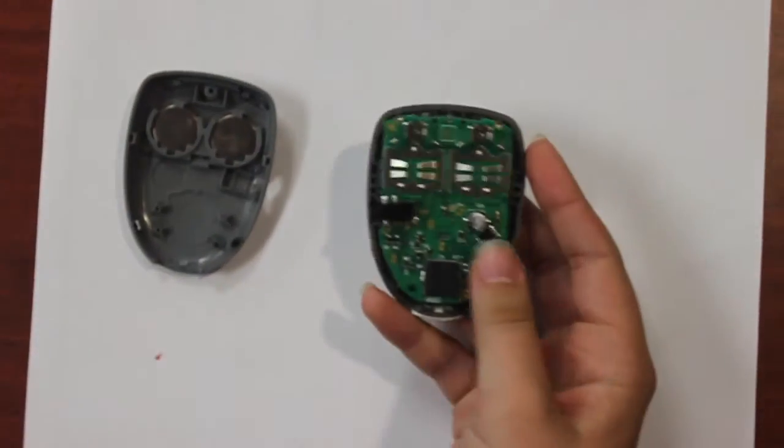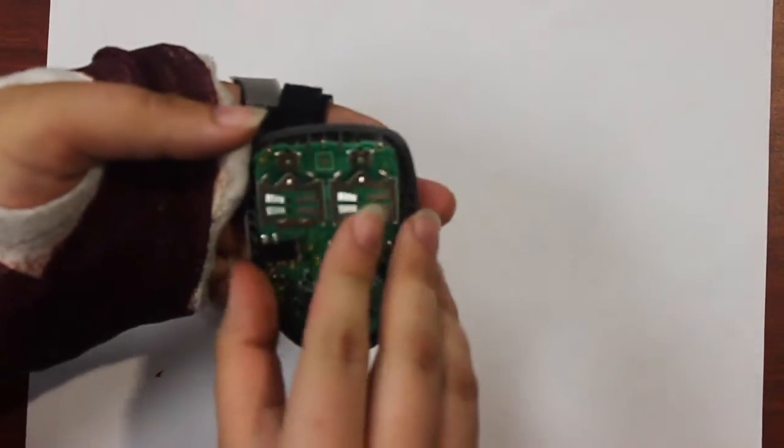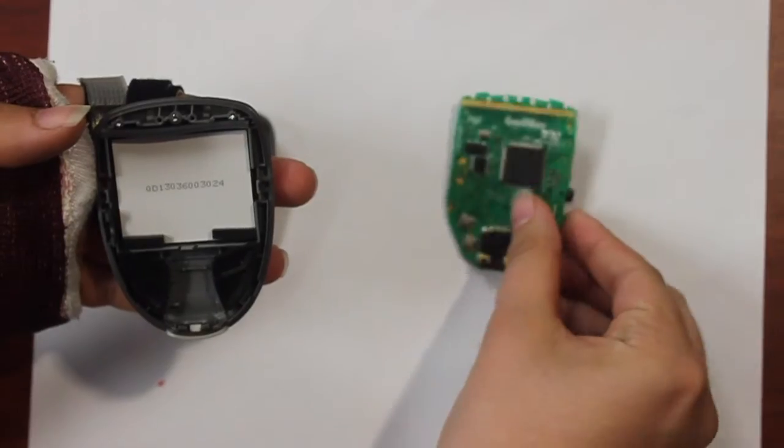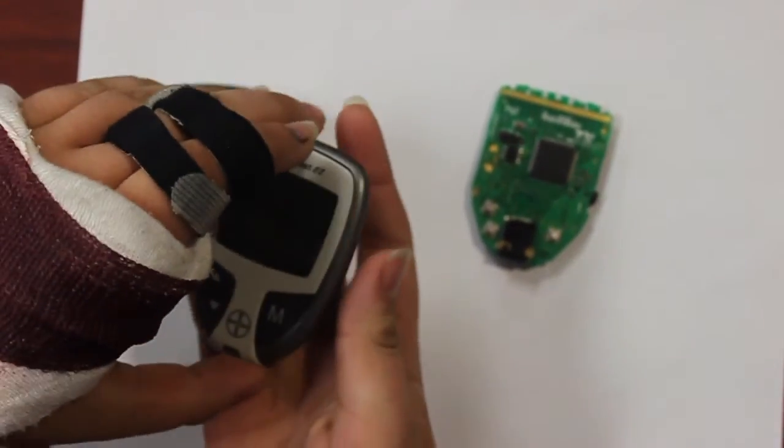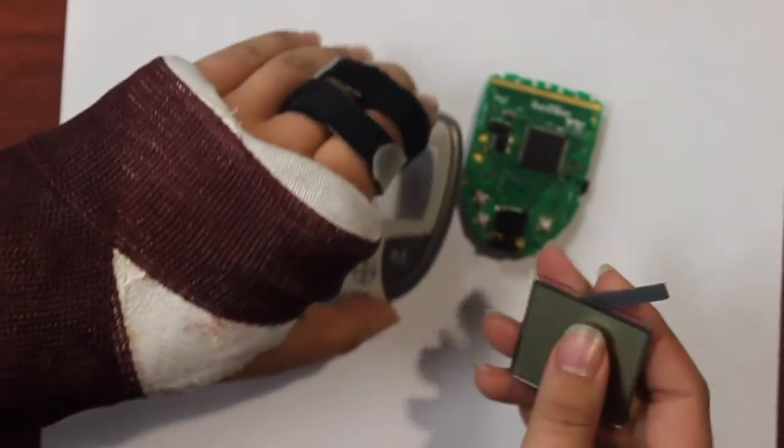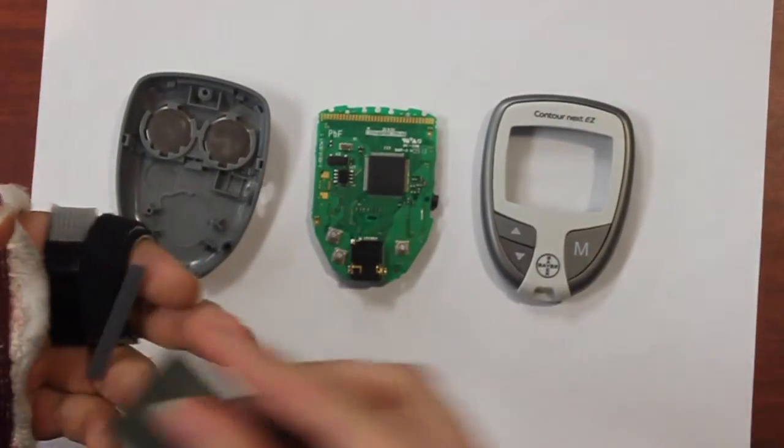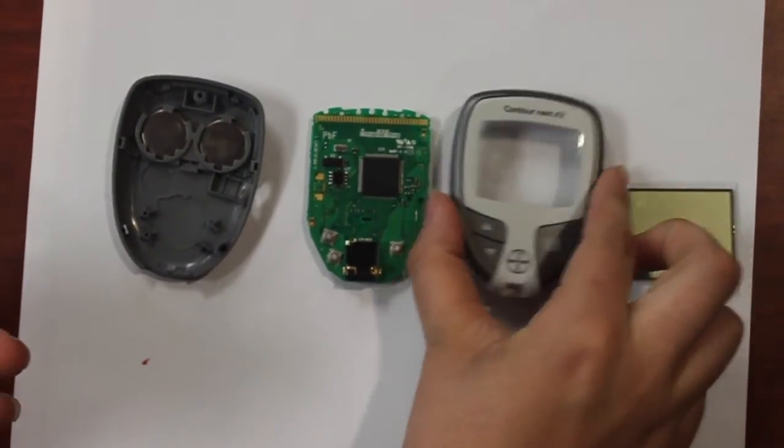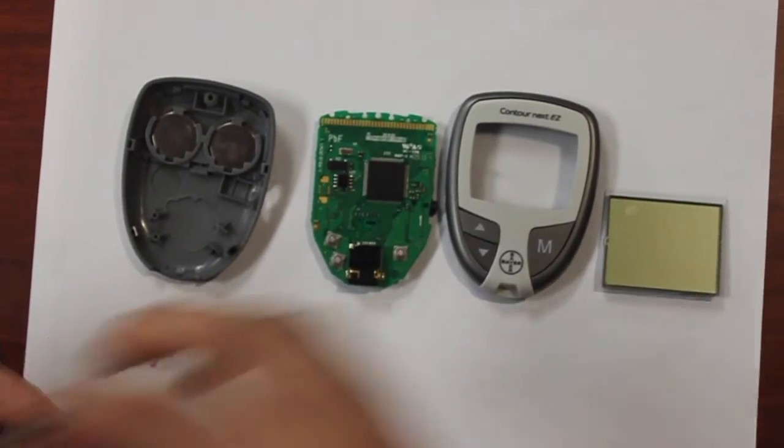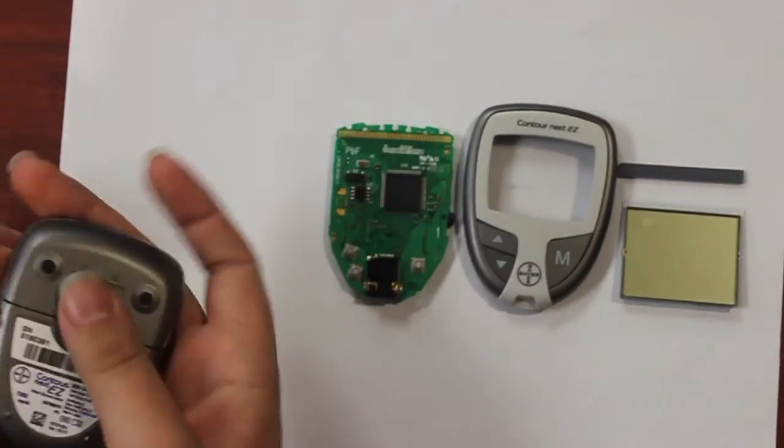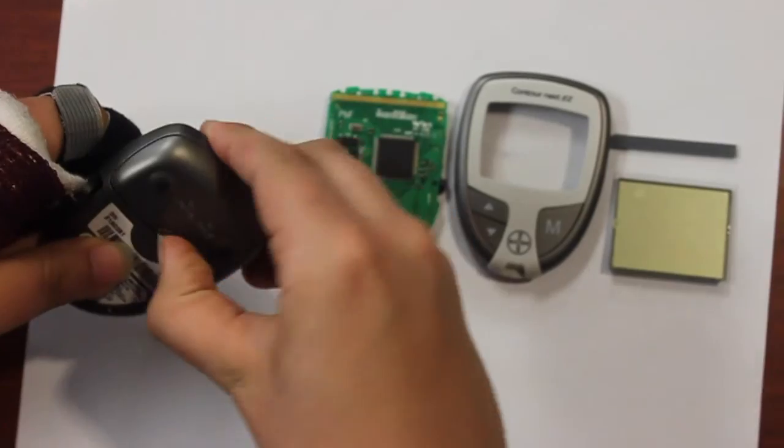Inside is a motherboard. On the other side of the motherboard is the LCD screen that displays the results. Attached to the LCD screen is a small conductor. On the back casing, covered by a little cover, are the two batteries.